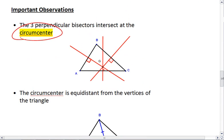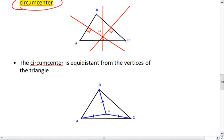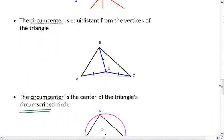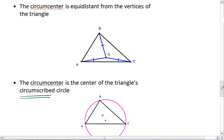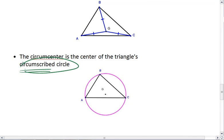So what you need to know is that perpendicular bisectors meet at the circumcenter. The circumcenter is equidistant from the vertices of the triangle, which means it's the center of the circumscribed circle. And the circumscribed circle is the circle that will pass through each vertex of the triangle.